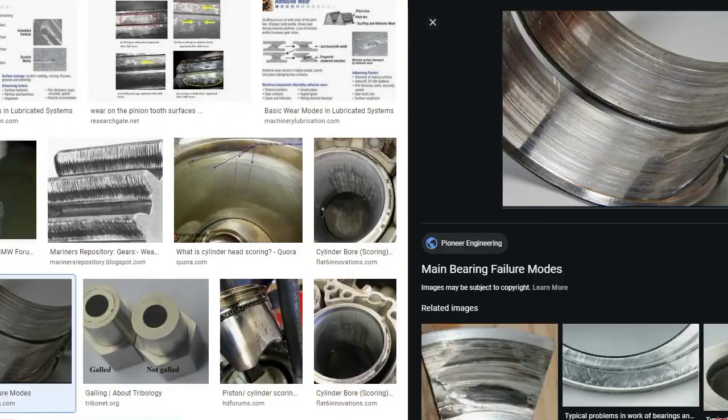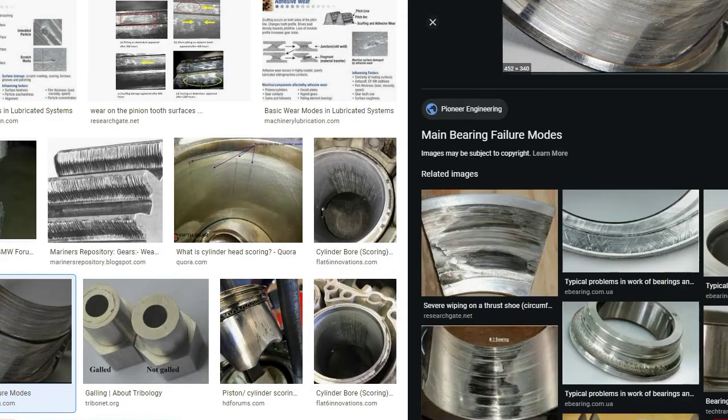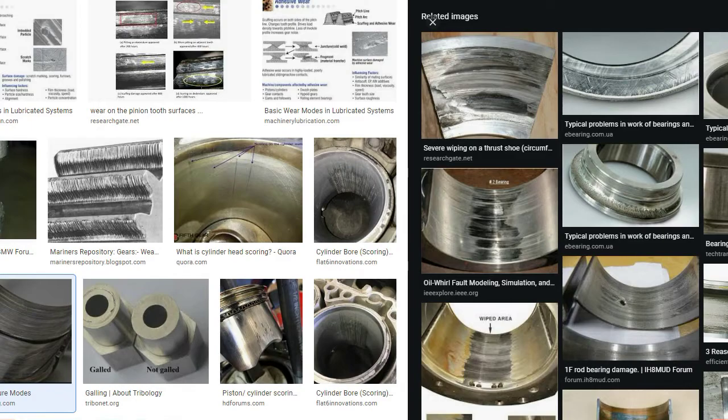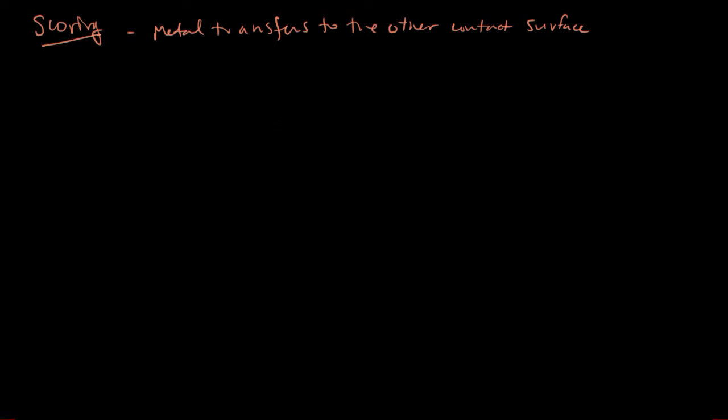Sometimes you'll hear adhesive wear described as scoring. Scoring is the mechanism when the metal transfers to the other contact surface. You may have seen scoring, for example, on different metal surfaces or between bearing races. If you've been around machines much, you've seen this. This is what scoring will look like, the transfer of that material from one surface to another.